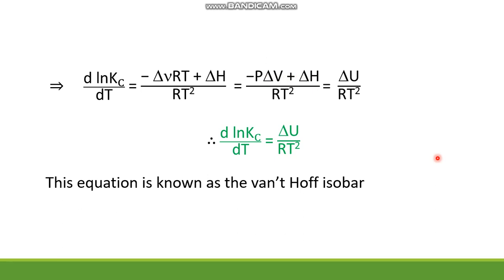This way, we are getting temperature dependence of equilibrium constant in terms of concentration. The relationship is known as the van't Hoff isobar, and it is d ln Kc by dT equals delta U by RT squared.